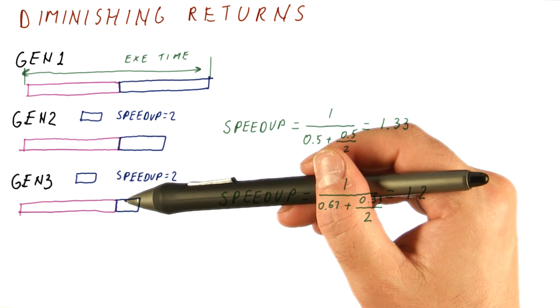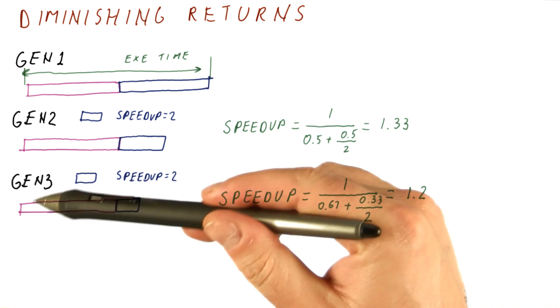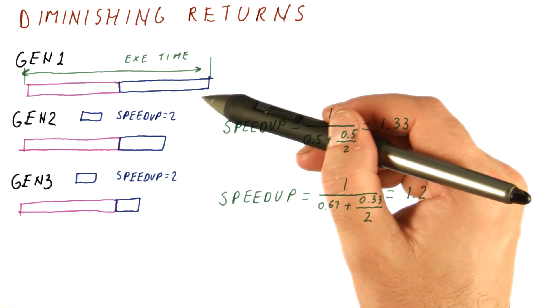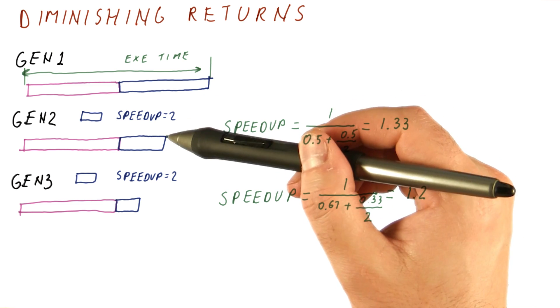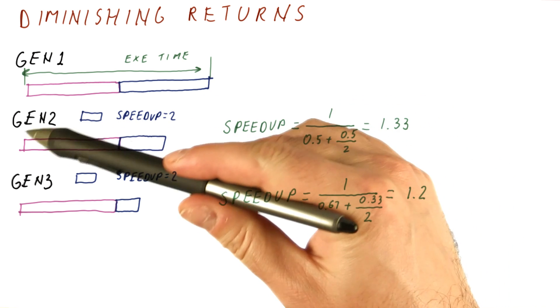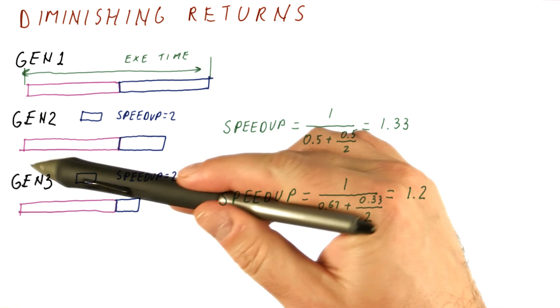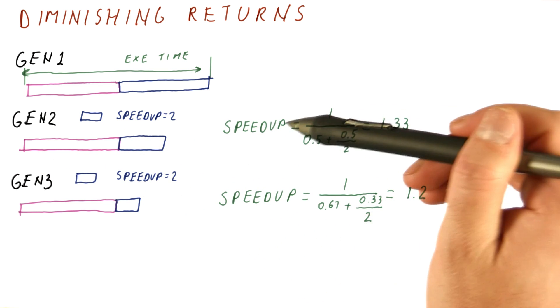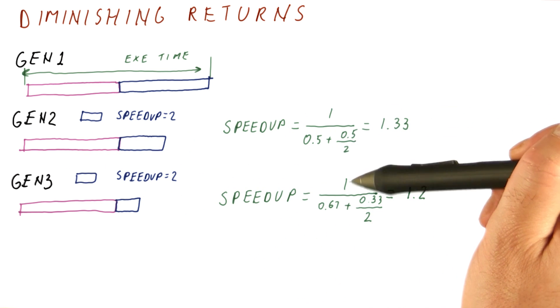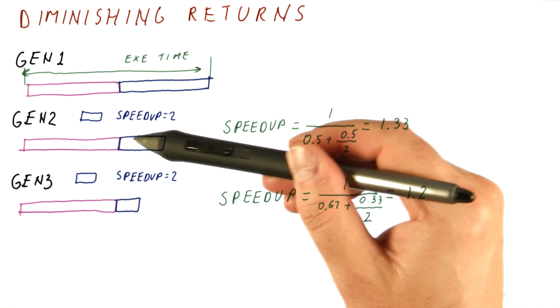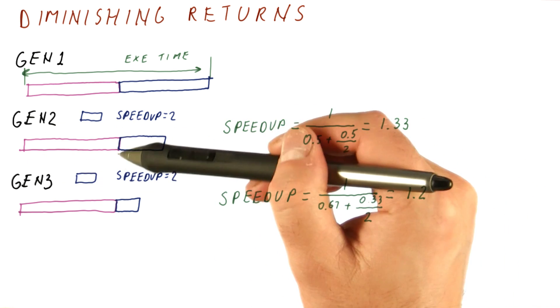And we need to reassess what is now the dominant part in the execution time. In other words, once you have applied one improvement, you need to reconsider what is now the new dominant part in the execution time. And definitely, when applying Amdahl's law, we need to consider what is now the fraction enhanced and the fraction unenhanced.